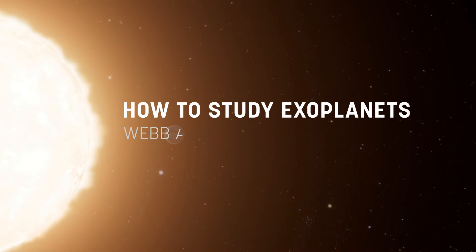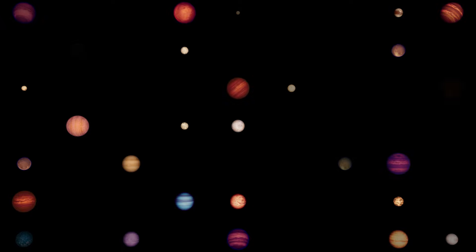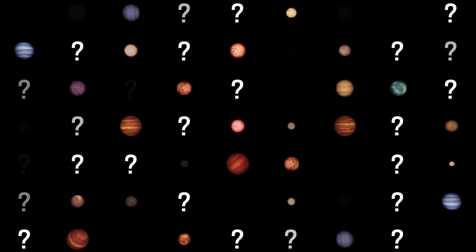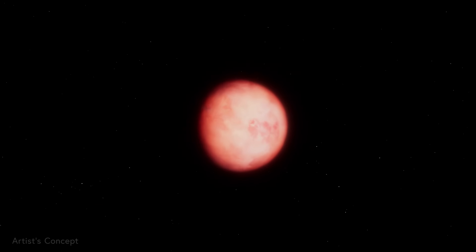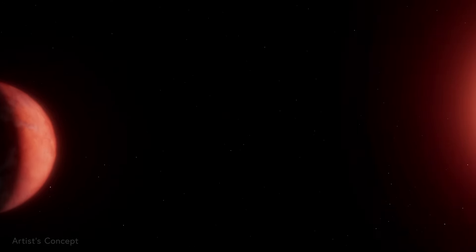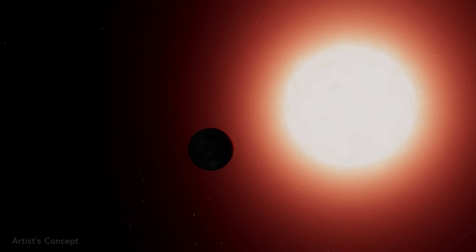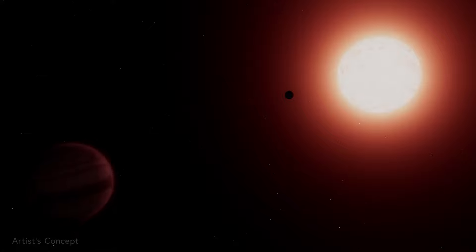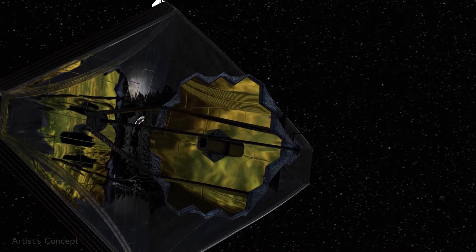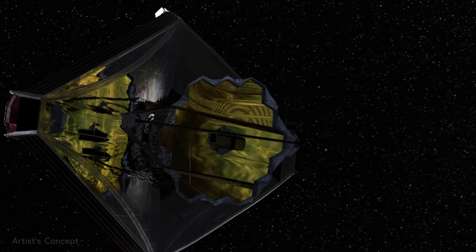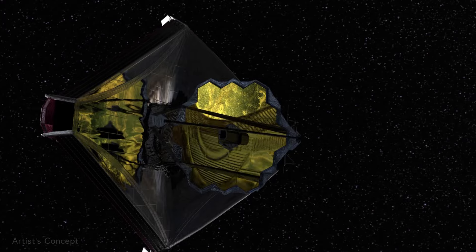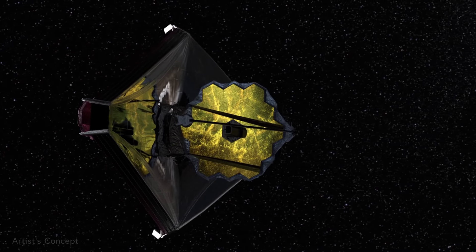How to study exoplanets, Webb, and challenges. Thousands of exoplanets have been discovered, but there's still a lot we don't know about these fascinating worlds. How did these planets form? Can planets around red dwarf stars hold an atmosphere in the face of violent stellar flares? What can these worlds tell us about our own solar system? The James Webb Space Telescope is helping answer these questions by observing some of the most interesting exoplanets astronomers have identified so far.